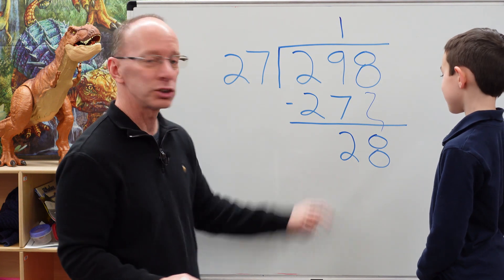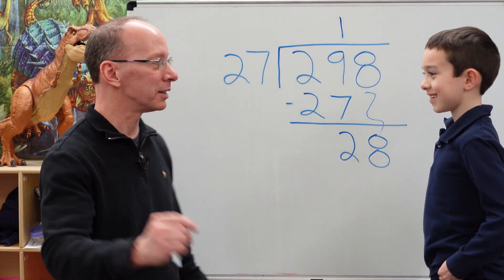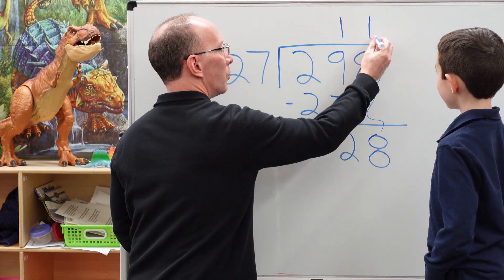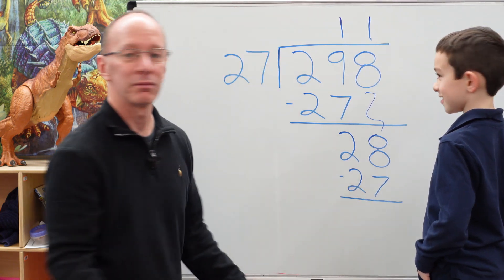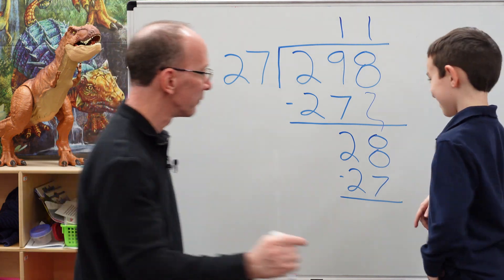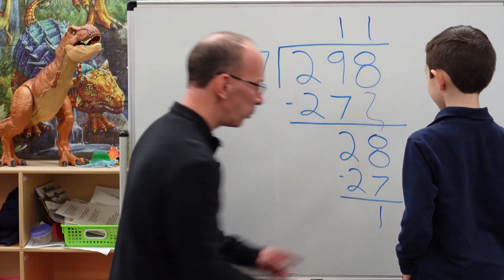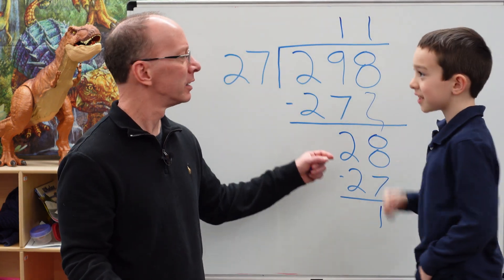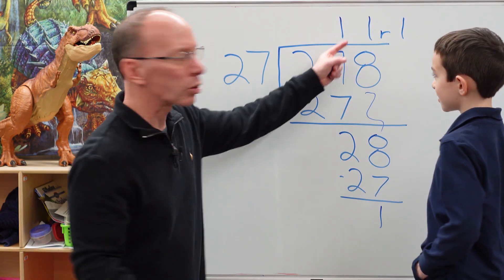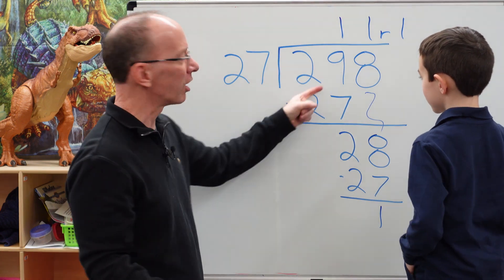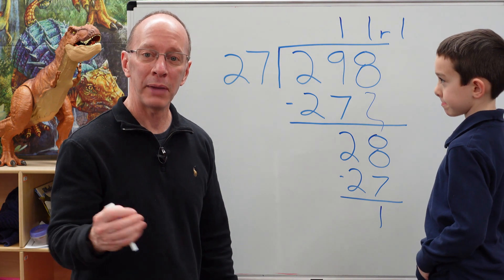Now I have to take 27 into 28. How many times can I put 27 into 28? One. So we put 1 right here. 1 times 27 is 27, and we subtract it. What are we left with? 1. And what is this number here? A remainder. This is our quotient — that's the answer. This is our dividend and our divisor. Our answer is 11 remainder 1.